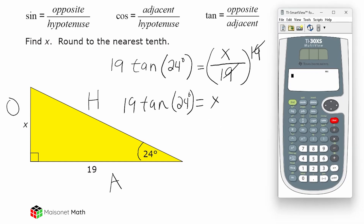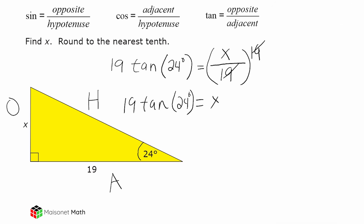So let's input this into a calculator. We take 19 and multiply it by the tangent of 24 degrees, and we come up with a value of 8.45 and some change. We have to round to the nearest tenth, so 8.45 rounds to 8.5. So side x is approximately equal to 8.5 units.